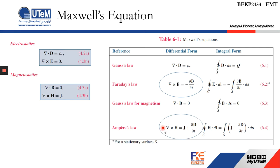Similarly, for Ampere's law, previously under magnetostatics we derived ∇×H = J, where J is the current density. Later, when we study displacement current, we'll see that under time-varying fields, the curl of the magnetic field strength H gives not just the current density J but also includes the electric flux density D — so the equation becomes ∇×H = J + ∂D/∂t.